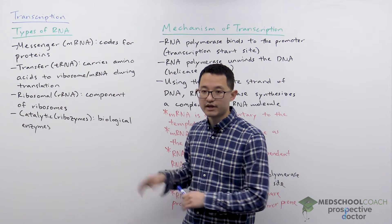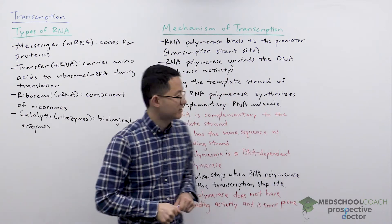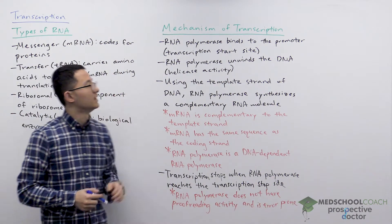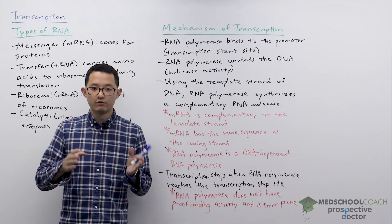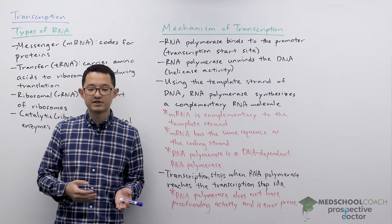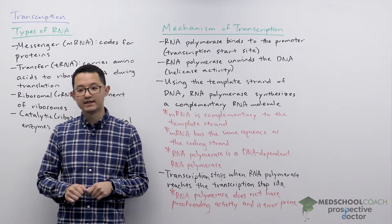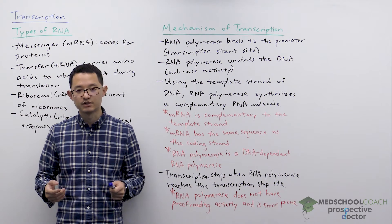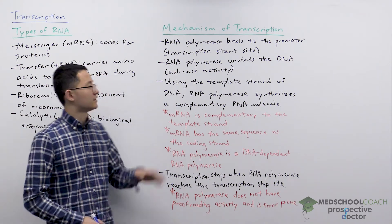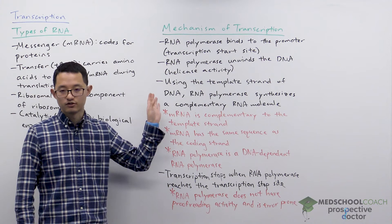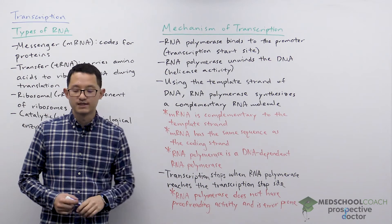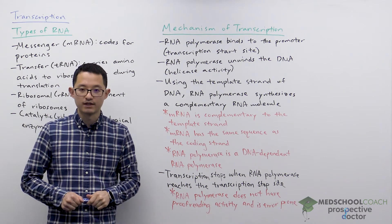So those are the different types of RNA that can be transcribed. Let's now talk about how transcription occurs. One of the main differences between transcription and DNA replication is that DNA replication involves many enzymes. Transcription is simpler in that there's really one main enzyme — RNA polymerase — that does everything.